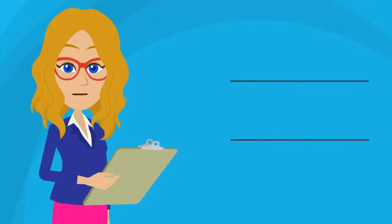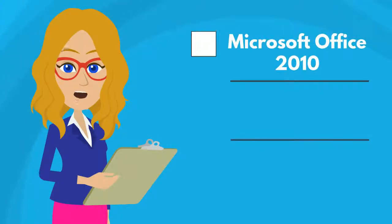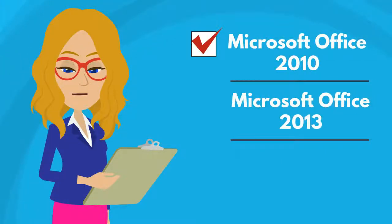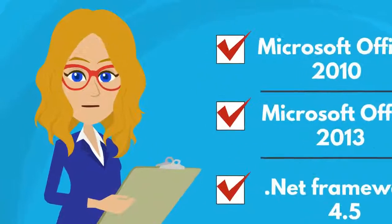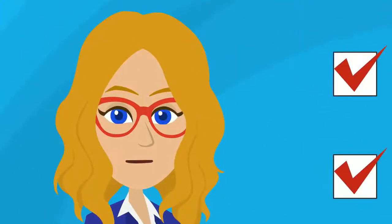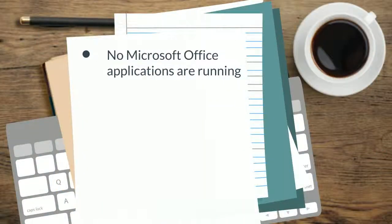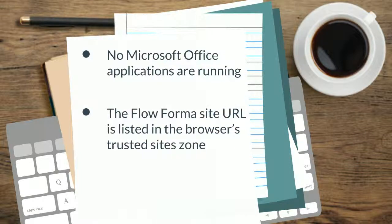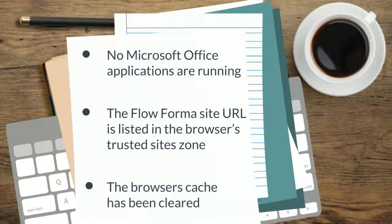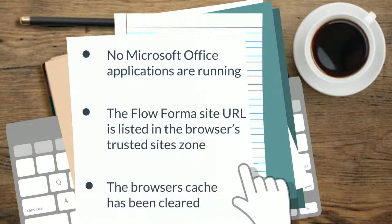To install the plugin, you need Microsoft Office 2010 or 2013 and .NET Framework 4.5. If this is your first time installation, please check that no Microsoft Office applications are running, close any open instances, the Flowformer site URL is listed in the browser's trusted site zone, and the browser's cache has been cleared.